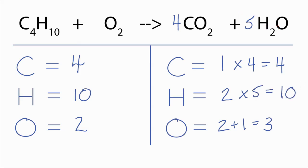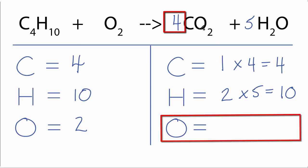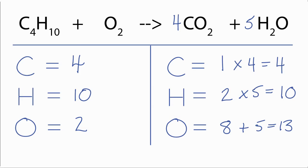And now I need to recalculate the number of oxygens. So I have four times two, that gives me eight oxygens in the carbon dioxide, plus five times the one—five. I have thirteen total oxygens on the product side. So everything's balanced except the oxygens. Well, the way to fix that is to multiply two times thirteen over two, and that'll give me thirteen and balance the oxygens.